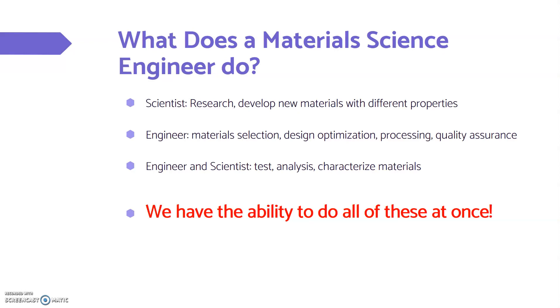What does a material scientist do? Scientists research and develop new materials with different properties. Engineers select the new ones and try to figure out ways to optimize them in the best way possible. Then engineers and scientists together test and analyze that material. All of us have the ability to do all of these at once.